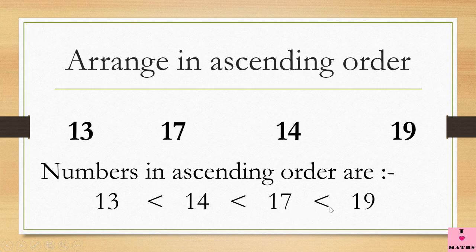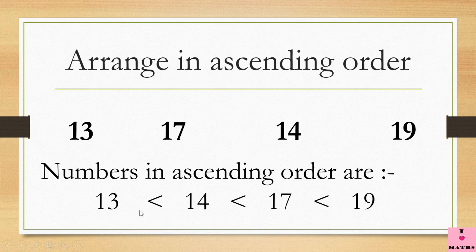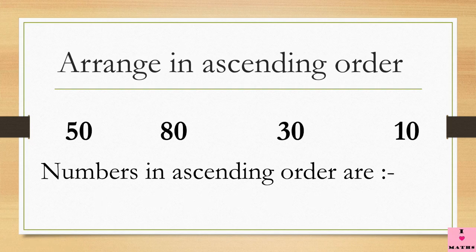Out of 17 and 19, 17 is smaller so the mouth is closed towards 17 and open towards 19. So the numbers in ascending order are 13, 14, 17, and 19. Now let's do the same with another set of numbers.